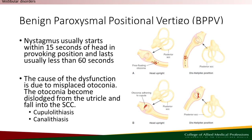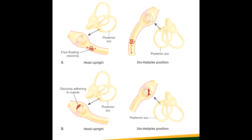During assessment of BPPV, it is essential to elicit symptoms by putting the patient in stressing positions. The appearance of symptoms, particularly nystagmus, indicates a positive diagnosis. Nystagmus typically begins within 15 seconds of the head being placed in a provoking position and lasts less than 60 seconds. Nystagmus is typically characterized by disruption of the vestibulo-ocular reflex, resulting in pendulum-like eye movements. The cause is a misplaced otoconia that becomes dislodged from the utricle and falls into the semicircular canal. When the otoconia gets stuck into the gelatinous area known as the cupula, it is known as cupulolithiasis.